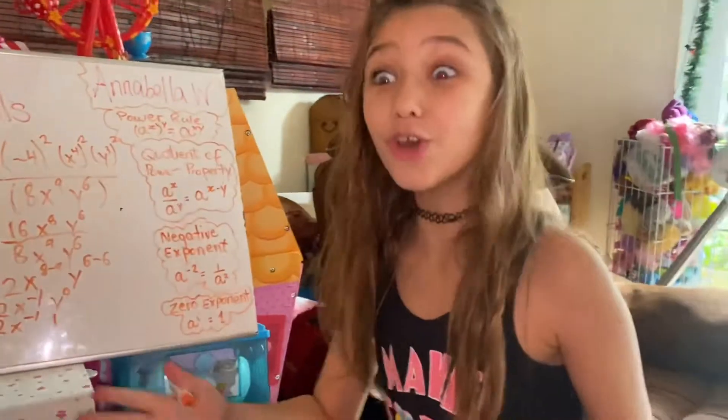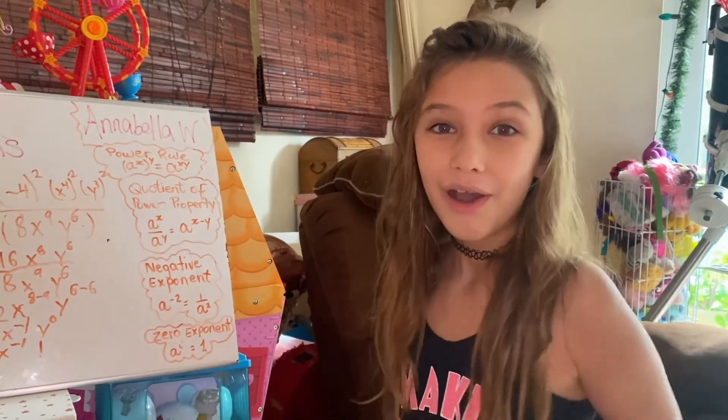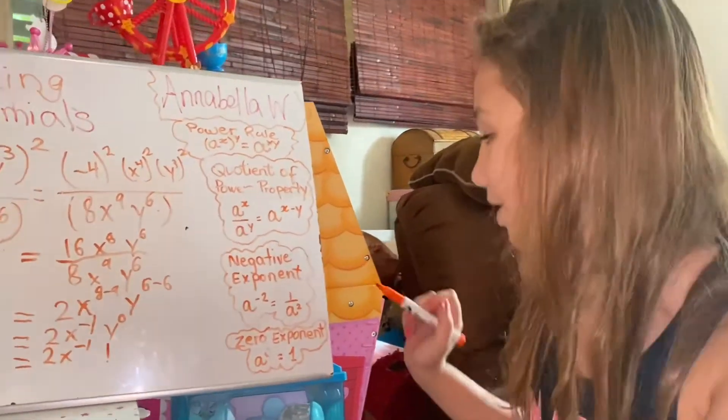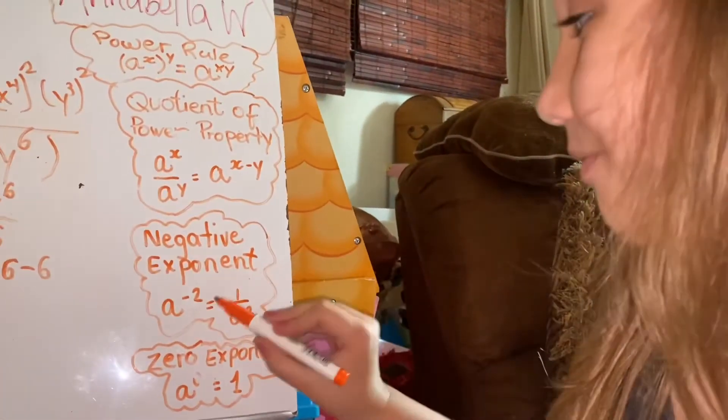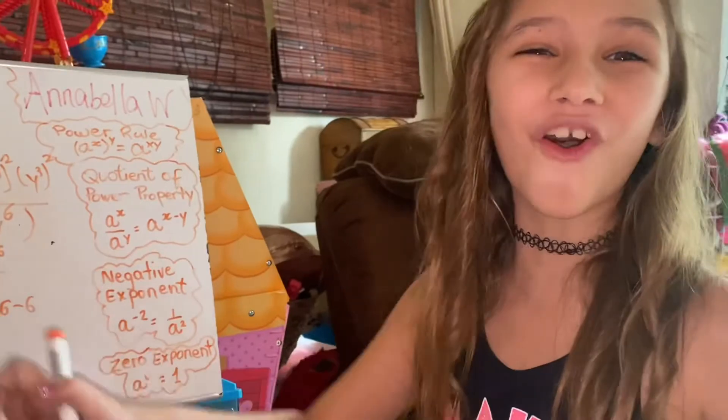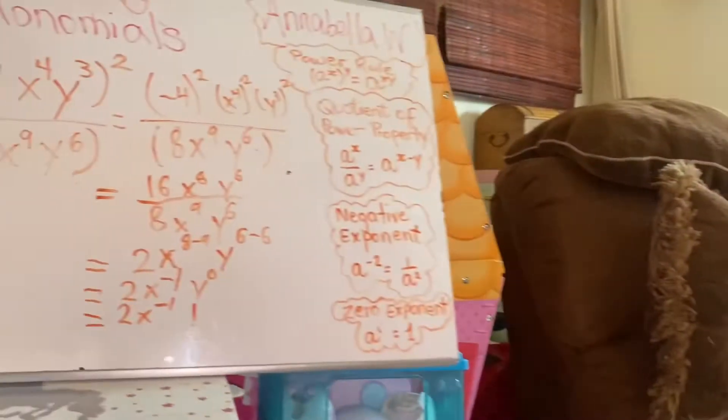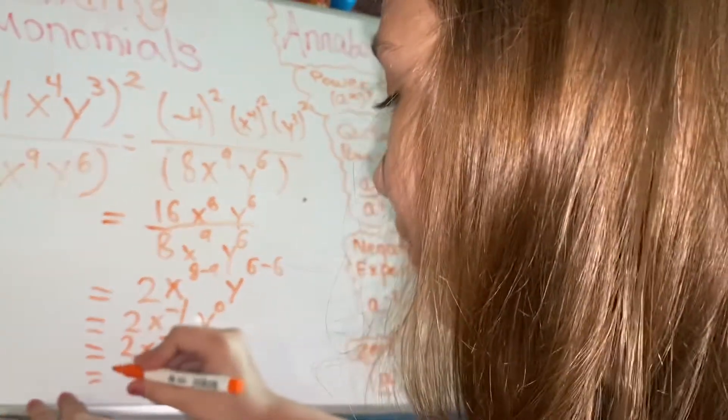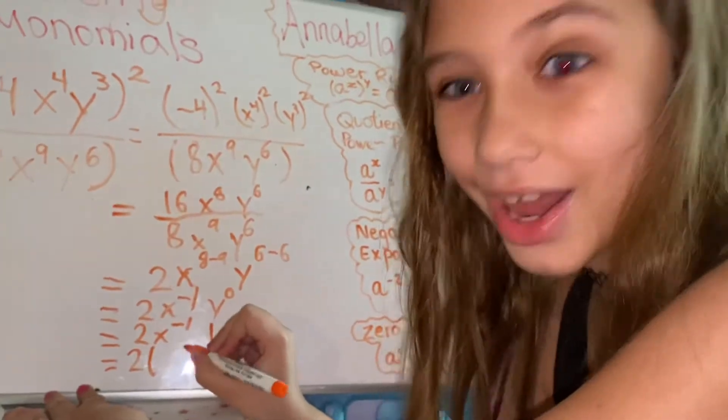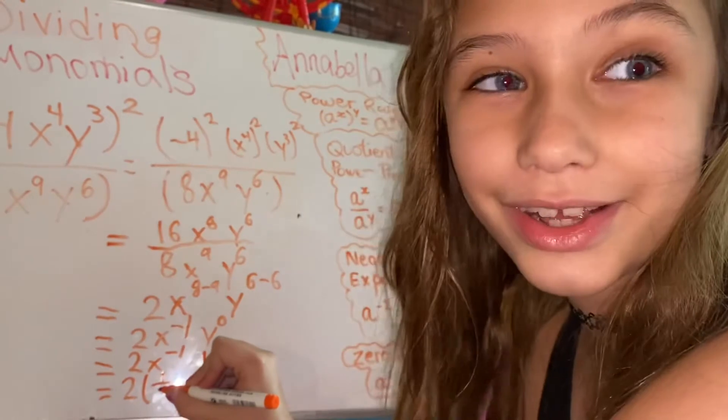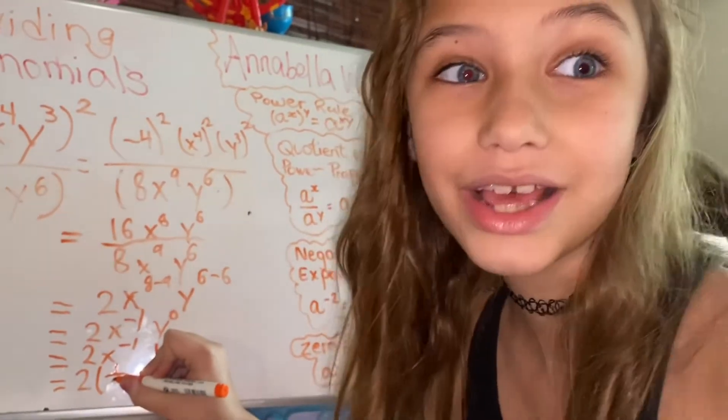But still we're not done. You know how in life we don't like negative people and negative talk? Well, in math we don't like negative exponents. And look, the negative exponent rule says that a negative exponent is equal to its reciprocal. That would be equal to 2, 1 over x by the power of 1. And remember, x by the power of 1 is equal to x.